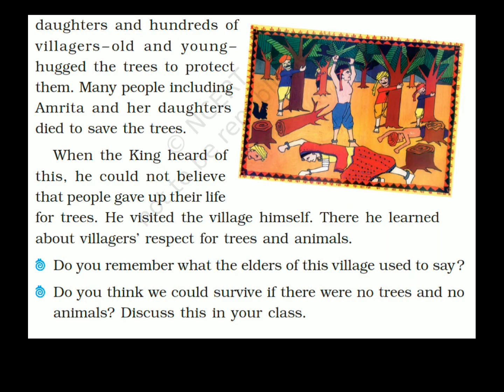Many people, including Amrita and her daughter, died to save the trees. When the king heard of this, he couldn't believe that people gave up their lives for trees. He visited the village himself and there he learned about the villagers' respect for trees and animals.